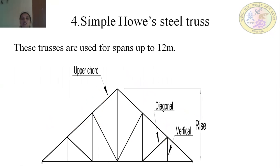The simple hose steel truss is used for spans up to 12 meters. It has upper chord members, a rise portion, diagonal members called struts, and vertical members.